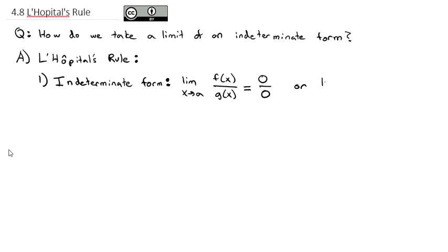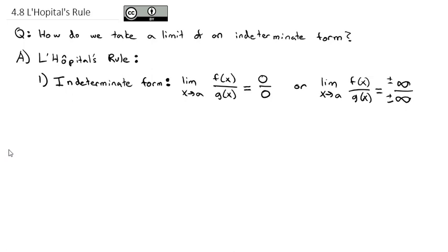The second indeterminate form is when the limit of f(x)/g(x) equals infinity over infinity — either positive or negative over positive or negative infinity. This is also indeterminate, because there are different sizes of infinity, and we don't know whether we're dividing by the same size. The result could be 0, infinity, 1, or many other things. So if our limit is one of these indeterminate forms, L'Hôpital's Rule gives us a way to solve it.